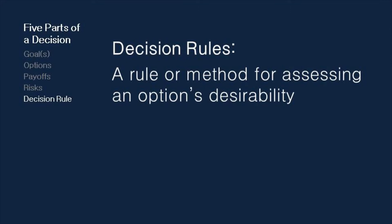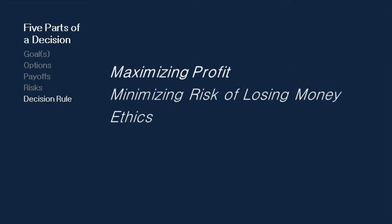The fifth part of any decision are decision rules — rules or methods for assessing an option's desirability. Roy has a few choices when deciding which option is best for him. He could pursue the maximum profit, or he could try to minimize risk, or he might do something else like stress investment in ethical companies. In this example, let's say that Roy is going to maximize profit. Remember, his goal was to have as much money as possible. Choosing ethics, while a noble goal, would not directly help him reach the goal of this particular decision-making exercise, which was to accumulate money. In the real world, our decisions often have multiple goals and more complicated rules for choosing the best option, but we're going to keep it simple here.